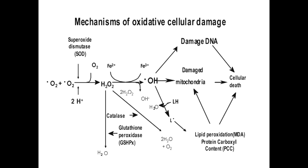What is a free radical? A free radical is an atom, molecule, or an ion that has an unpaired valence electron, which makes them highly reactive.